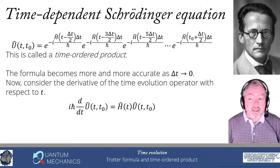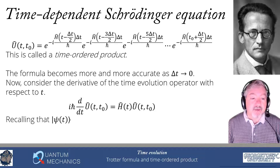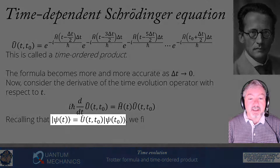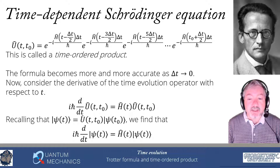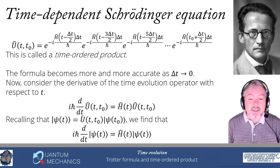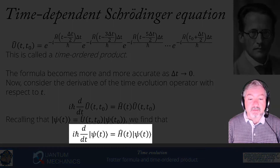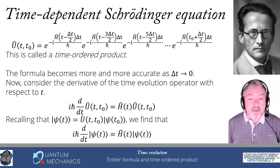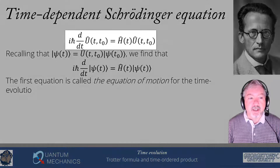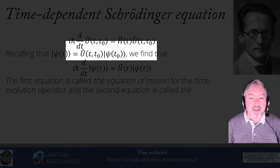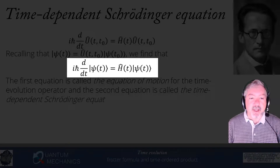To get the Schrödinger equation, recall that ψ(t) = U(t, t0) ψ(t0). Multiplying on the left by ψ(t0) on both sides and re-expressing U(t, t0) ψ(t0) as ψ(t), we get the time-dependent Schrödinger equation: iℏ d/dt ψ(t) = H(t) ψ(t). The first equation is the equation of motion for the time evolution operator, and the second is the time-dependent Schrödinger equation.